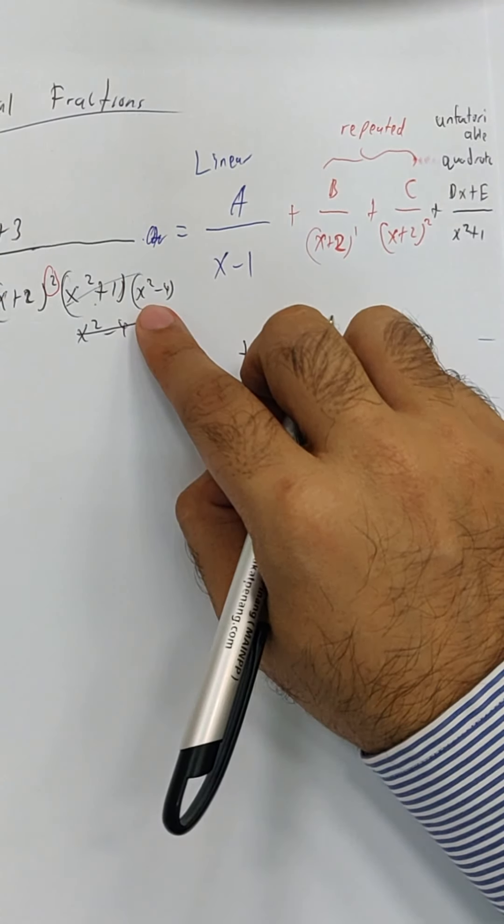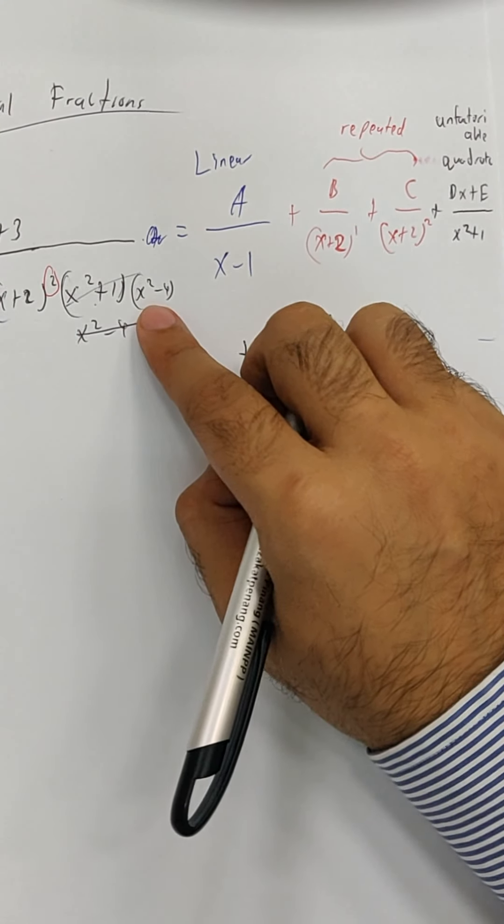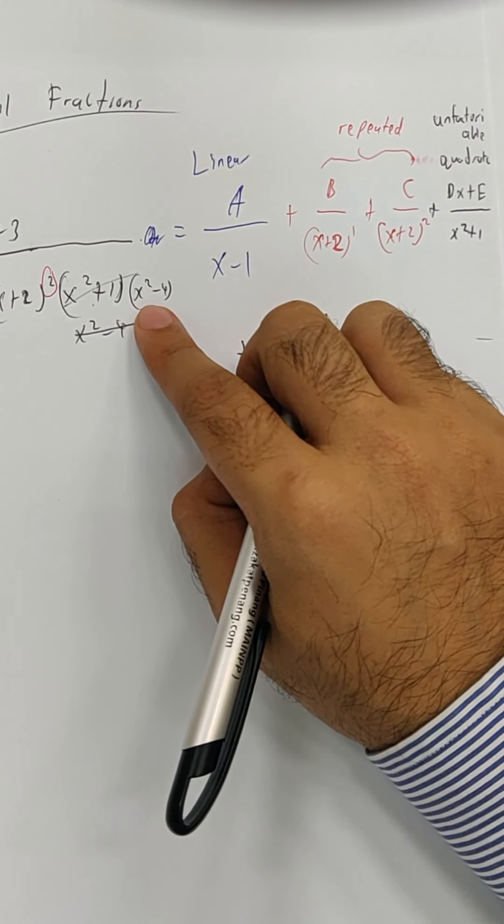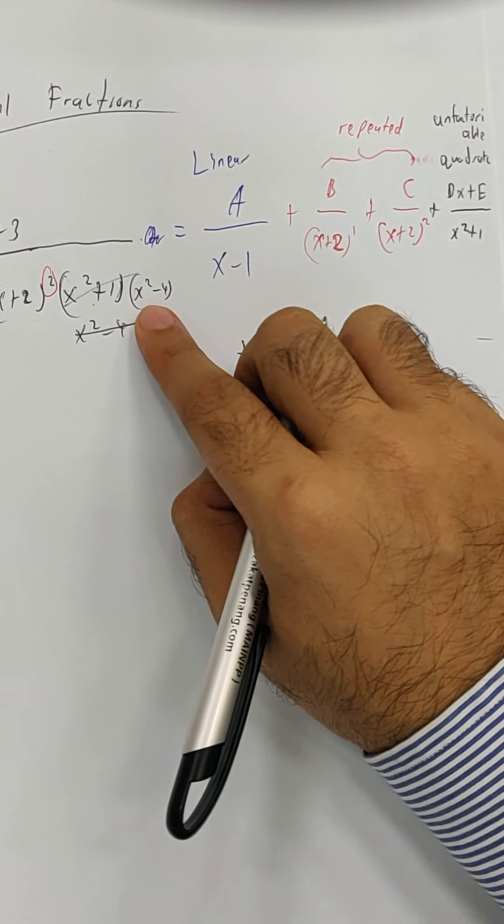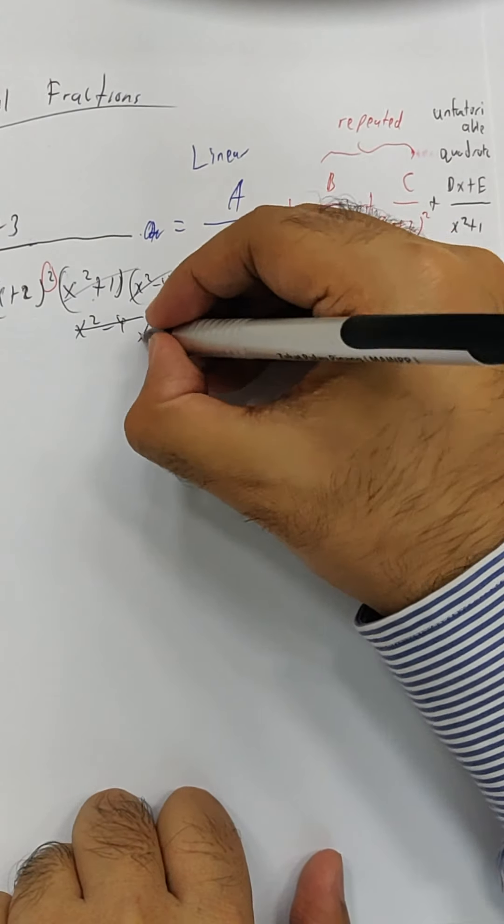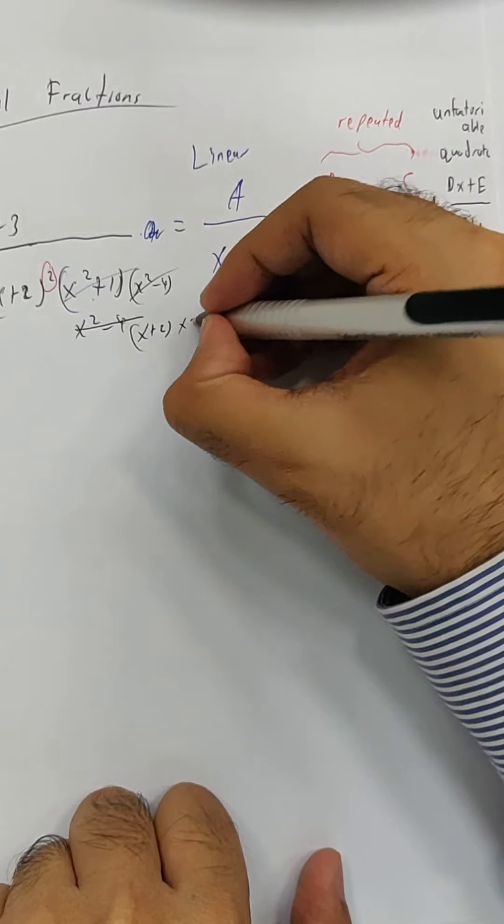It's quadratic, right? But is it unfactorizable? It can be factorized. What do I get for this one here? x plus 2, x minus 2.